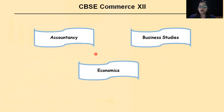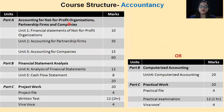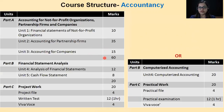Now let's talk about Accountancy and see its core structure. This year, in Accounts you have three parts: Part A, Part B and Part C. Part A is your compulsory part, which is on Accounting for Not-for-Profit Organizations, partnership forms and companies. In total, your Part A is of 60 marks.